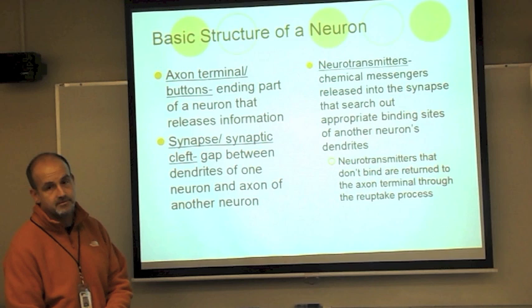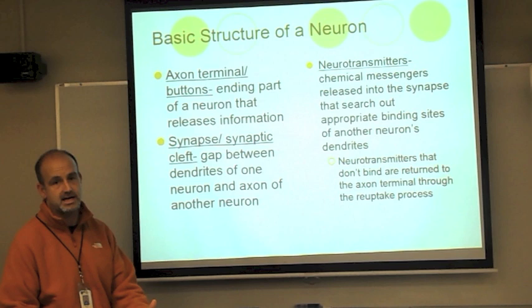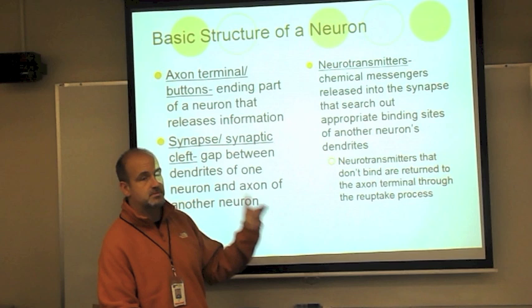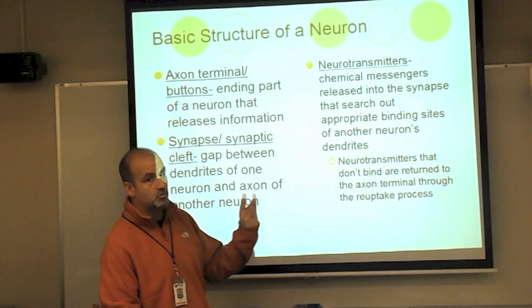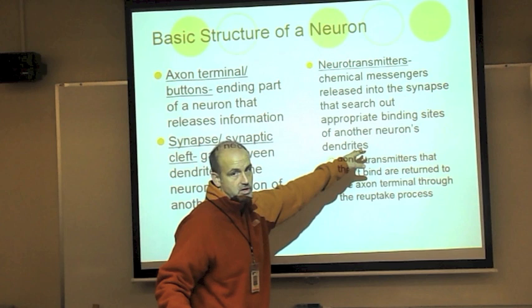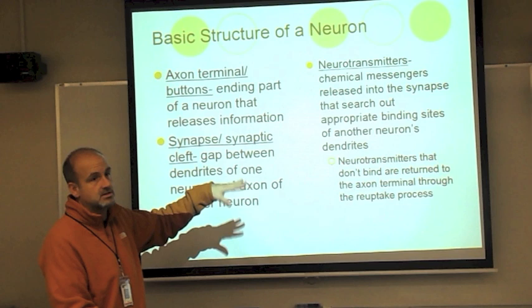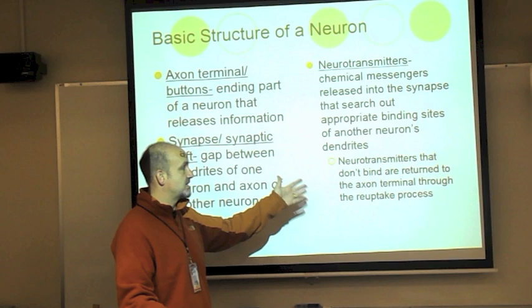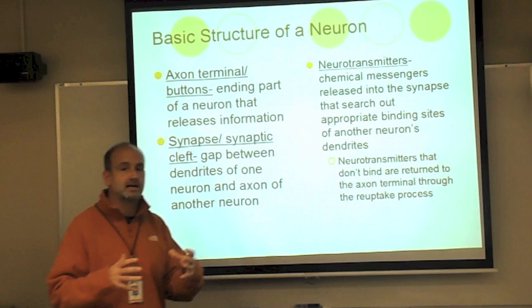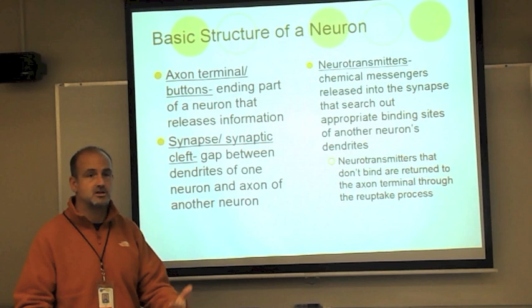The synapse or synaptic cleft is the gap between neurons — what separates the dendrites of one neuron from the axon of another. Neurotransmitters are chemical messengers released into the synapse. They have a specific design and a specific receptor site they're going to — like a key that goes to an appropriate lock. Only one key opens a lock; the same is true of neurotransmitters fitting on specific receptor sites. Neurotransmitters that don't bind are vacuumed back up in a process called reuptake.